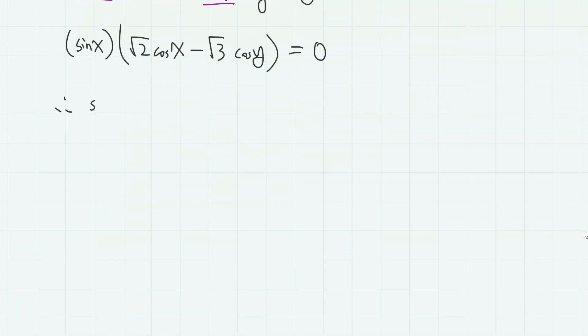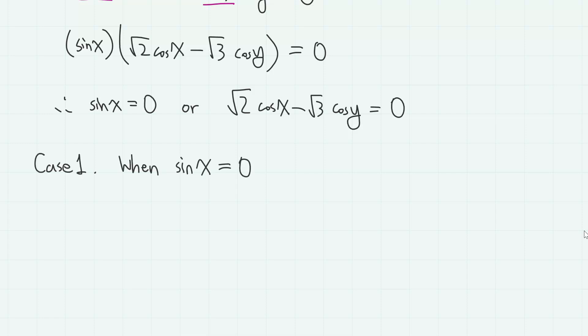So we have sine x equals 0, or square root of 2 cosine x minus square root of 3 cosine y equals 0. The problem is now divided into two cases. For the first case where sine x equals 0, since we have this range condition, we simply have x equals 0 or π.